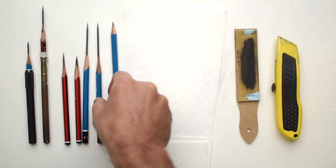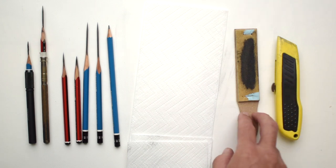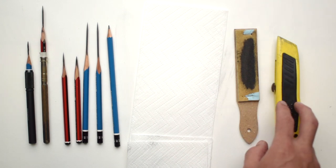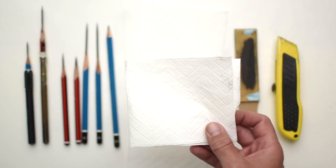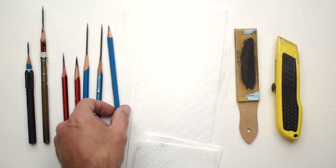It's a fairly straightforward and simple process. We just need a few tools like this sand pad, a utility knife, and I've also got some tissue for wiping away any residual graphite powder afterwards.